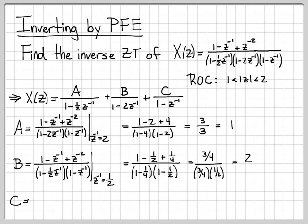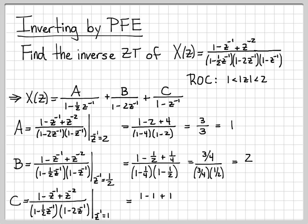Finally, for c, the strategy is the same. Multiply both sides by (1 minus z⁻¹) and pick the point z⁻¹ = 1, so that 1 minus 1 = 0. Plugging in: the numerator gives 1 minus 1 plus 1 = 1. The denominator gives (1 minus one-half)(1 minus 2) = (one-half)(negative 1) = negative one-half. So c = 1 / (negative one-half) = negative 2.